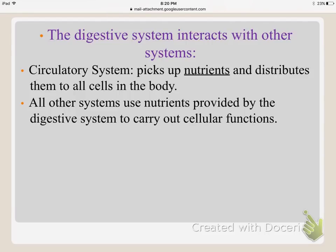The digestive system interacts with the circulatory system because all the nutrients the digestive system absorbs are picked up by the circulatory system and distributed to all cells in the body. Every single system in the body uses the nutrients the digestive system provides, so this is one of those systems that interacts with every other system.